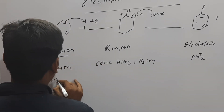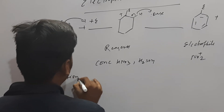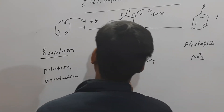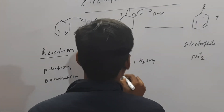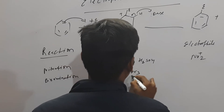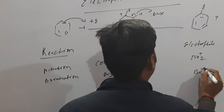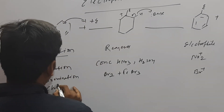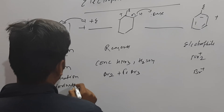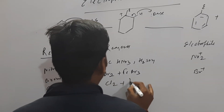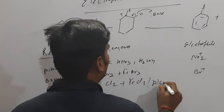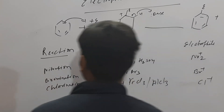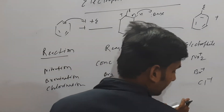उसके बाद Bromination - Br2 प्लस Lewis acid FeBr3, यह क्या होगा - Br+ यहाँ पे Electrophile। उसके बाद Chlorination के लिए Cl2 + FeCl3 या AlCl3, यह क्या बनेगा - Electrophile Cl+।